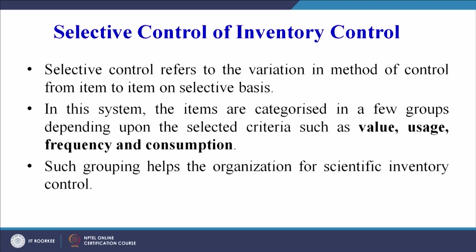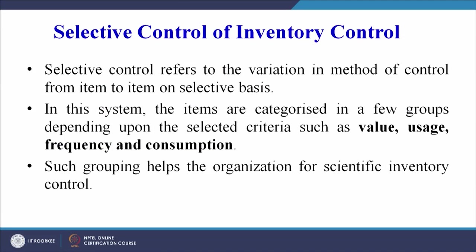Selective control of inventory refers to the variation in method of control from item to item on a selective basis. In this system, items are categorized into groups depending on selective criteria such as value, usage, frequency, and consumption. Such grouping helps the organization achieve scientific inventory control.